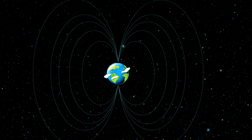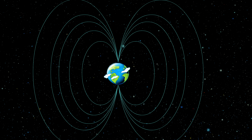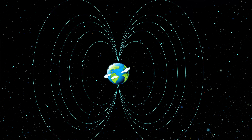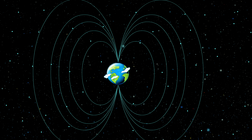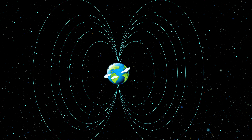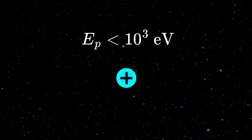This argument later turned out to be partially wrong, as there is a massive magnetic field around the Earth which curves the trajectories of charged particles coming from the sun, so they can have an influence even during the night. Today we know that there is radiation coming from the sun, but these particles have low energy.